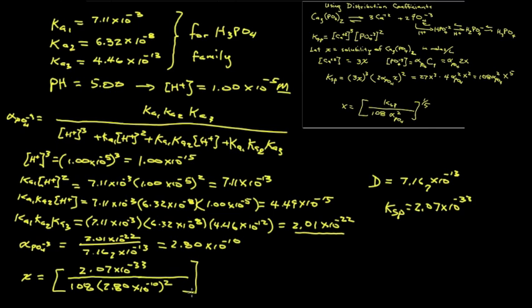Take that ratio and extract the fifth root. That numerically gives us a value of 7.54 times 10 to the minus 4 molar. For something that was very low solubility at pH 5, we have modest solubility for this substance.